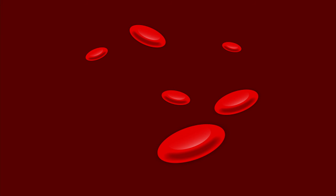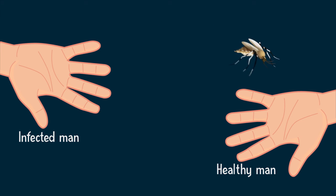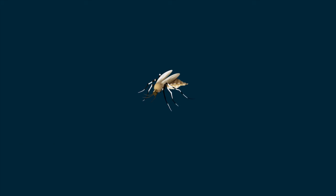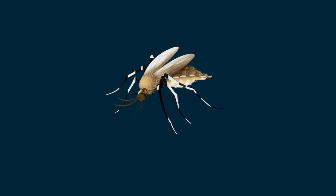When a mosquito bites an infected person, the virus enters the mosquito's body. This infected mosquito then bites a healthy human, transmitting dengue. This is the cycle of dengue virus transmission. Mosquitoes that transmit dengue and chikungunya can be easily identified.